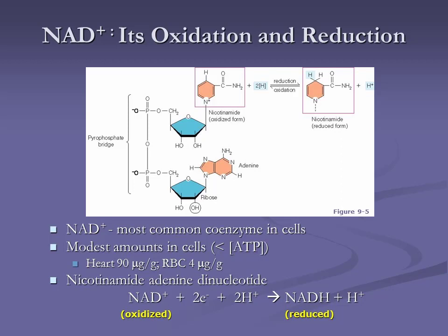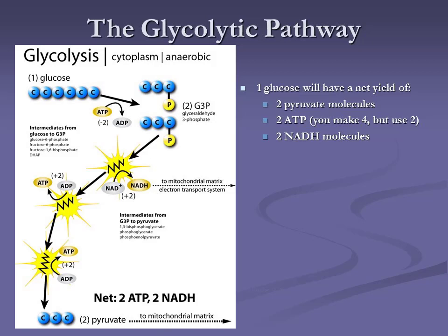Getting more detail, but let's keep it simple. Without looking at the slide, what are the three net products of glycolysis? Two ATP, two NADH, and two pyruvate. All you have to remember: two of everything, and the three everythings are ATP, NADH, and pyruvate.